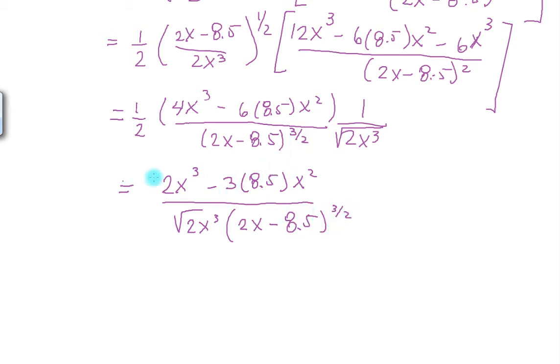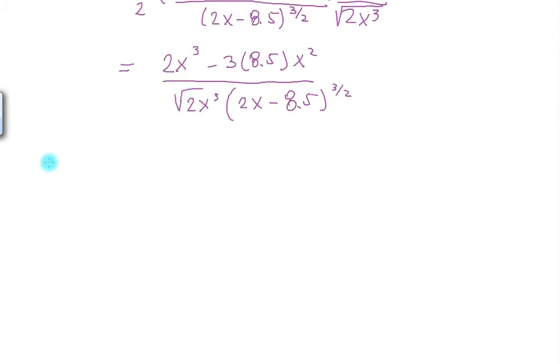Now, like I said, to make this equal to 0, we put the numerator equal to 0. But the numerator can be simplified by X squared. So we have 2X minus 3 times 8.5 over this term again.